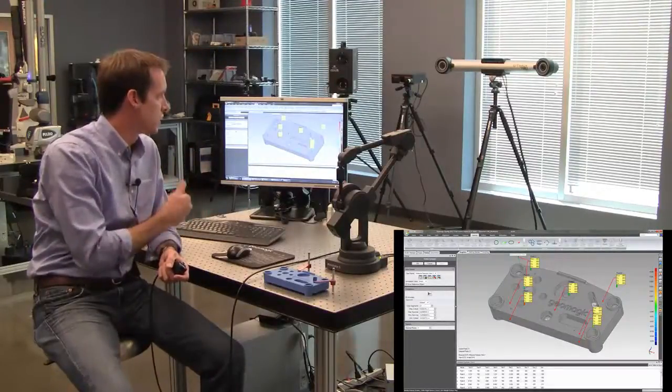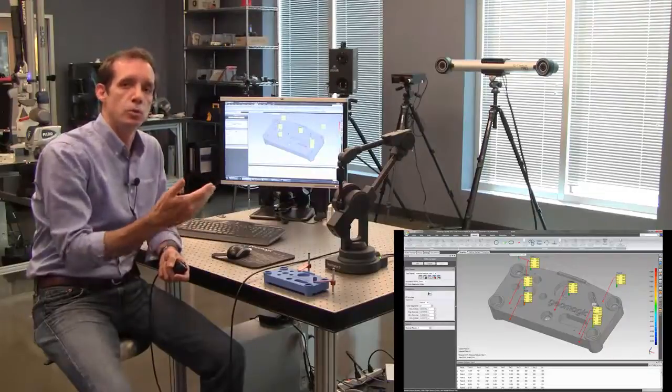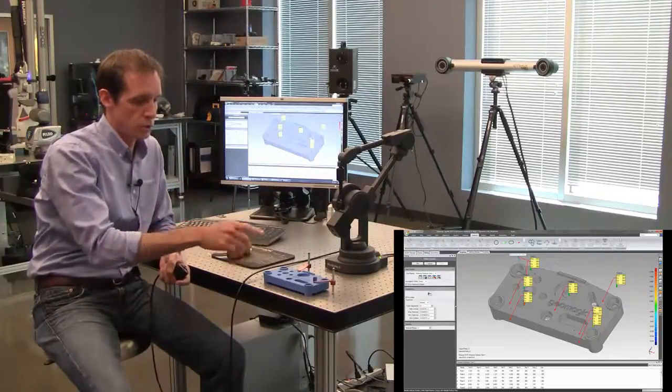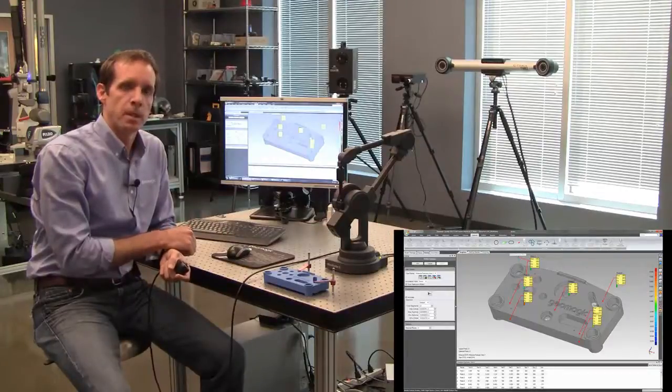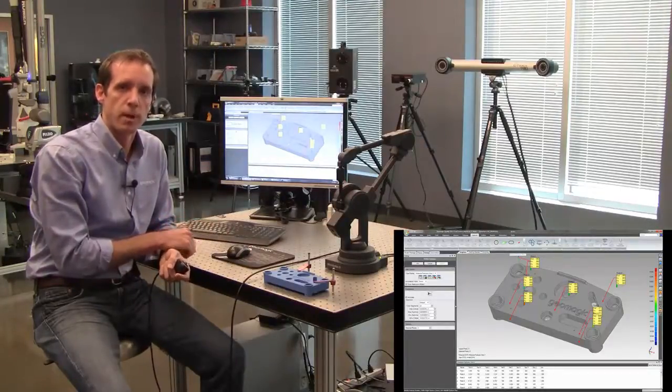And again, once I'm done with this, I can click OK. I can do some feature creation of cylinders, planes, cones, perhaps even do some GD and T measurements with the probe tip. And then ultimately create a report that I can output in a variety of formats.